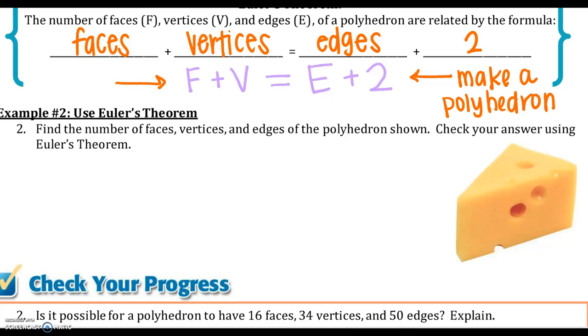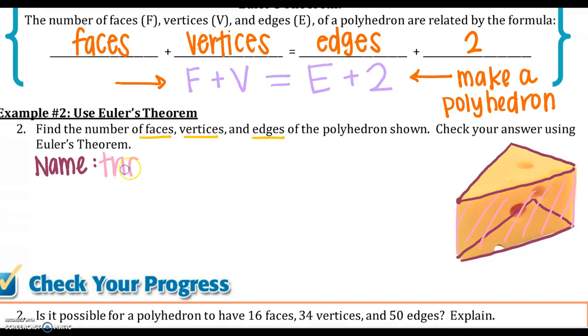So let's check our progress for, or let's use the Euler's theorem for number two. Find the number of faces, vertices, and edges of a polyhedron shown. Check your answer using Euler's theorem. So let's first name it. I do see a triangle, but it does not come to a single point. So if you think about a slice of cheese, here is a triangle, and on the bottom, there would be a triangle also. So that would be two bases, so I know it's a prism. Now those triangles are connected by these rectangles right here, so I would call this a triangular prism.